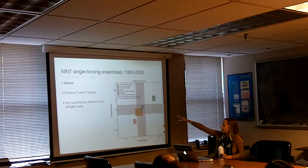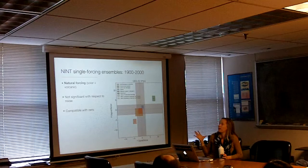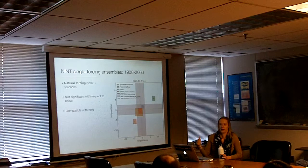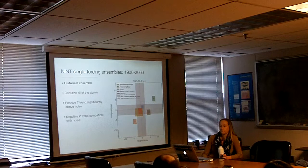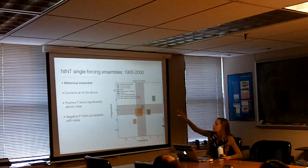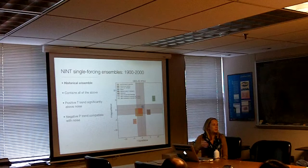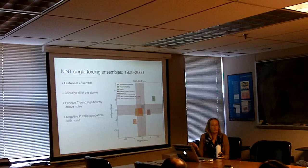Here's ozone: it gives us positive temperature and precipitation trends, but over the century scale it doesn't do anything significant with respect to climate noise. Natural forcing — I had to combine solar and volcanic because there was an error in the volcanic simulations — as expected, natural forcing doesn't really do anything at the century scale; the trends are compatible with zero. For the historical ensemble — the GIST-R-NINT historical runs forced with all forcings — there's a positive temperature trend significantly above the noise, but a negative precipitation trend compatible with noise. So over the century scale you see warming but no significant change in precipitation.